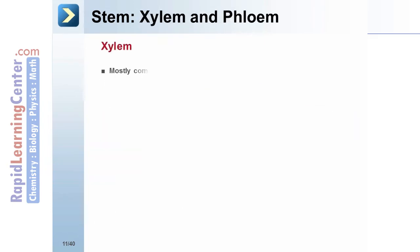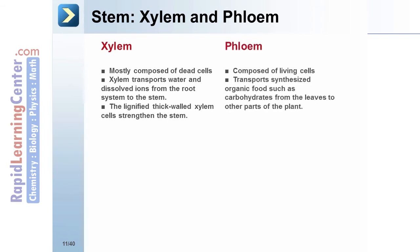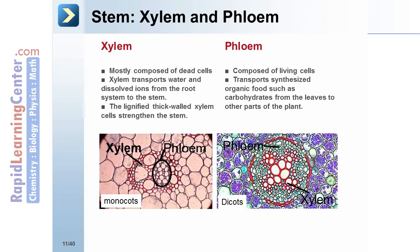Xylem is mostly composed of dead cells and transports water and dissolved ions from the root system to the stem. The lignified, thick-walled xylem cells strengthen the stem. Phloem is composed of living cells and transports synthesized organic foods such as carbohydrates from the leaves to other parts of the plant.